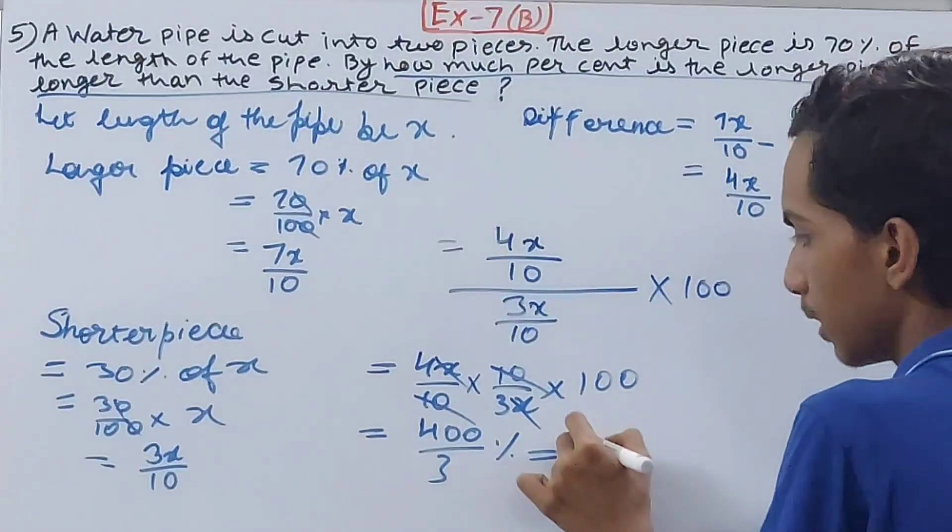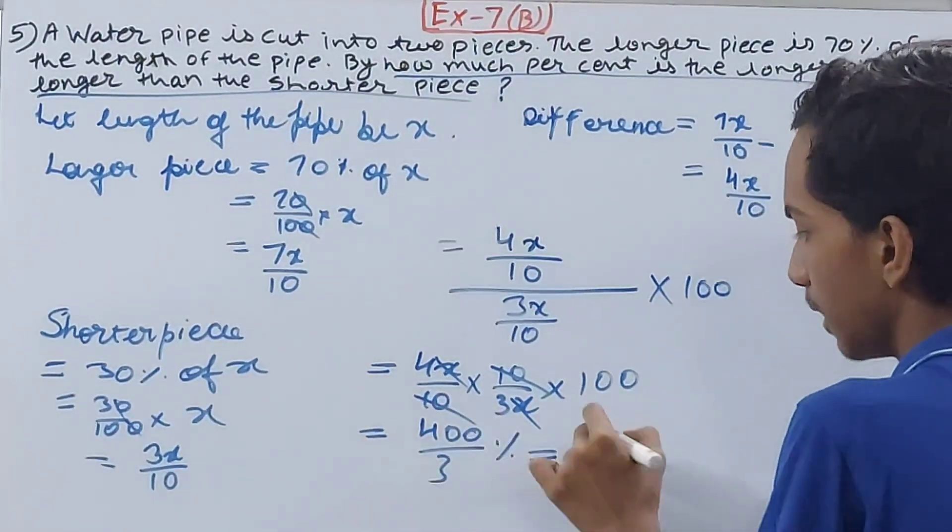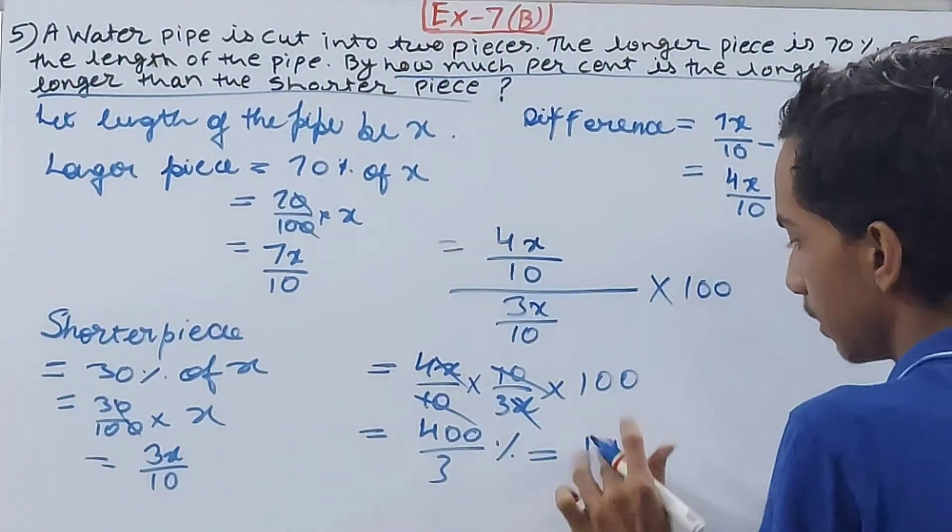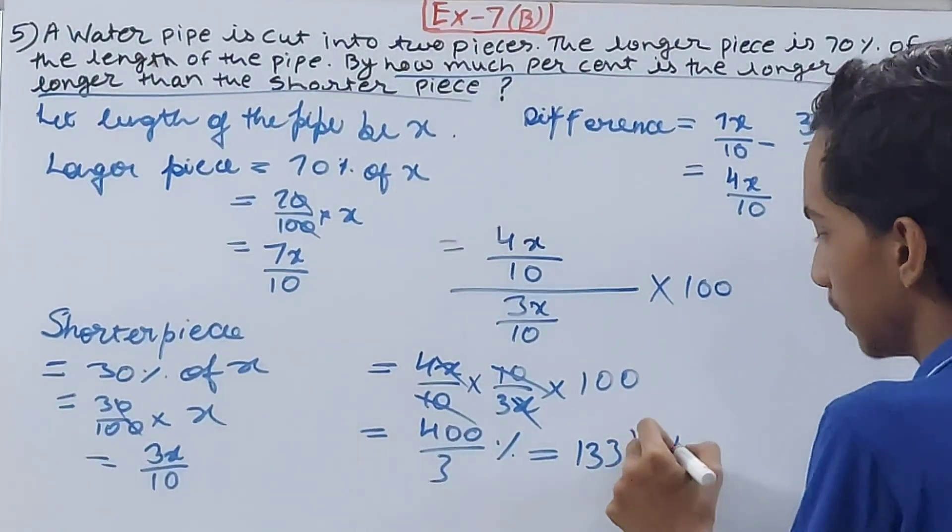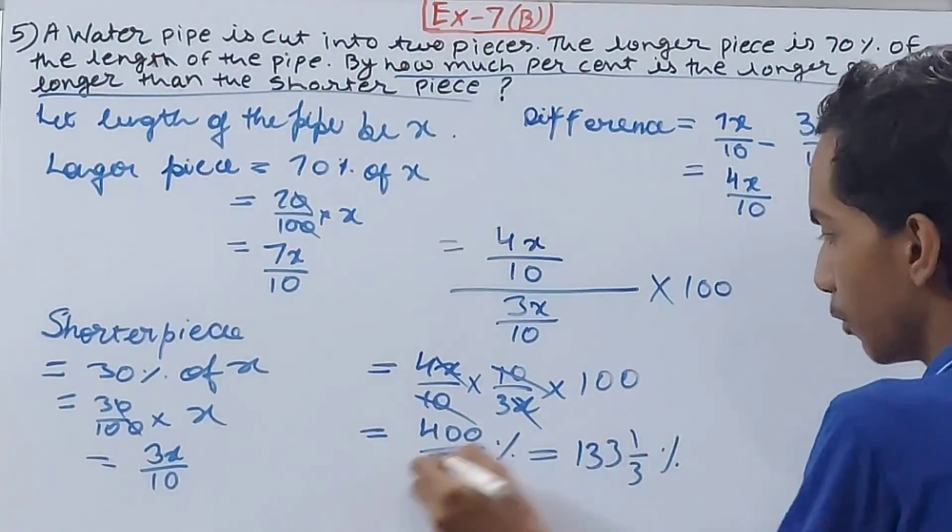That is 133 whole 1/3 percent. You can write it both ways, this is fine, this is also fine. Both are correct. That is your final answer.